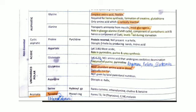Glycine is the simplest amino acid. It gives flexibility to the structure of proteins. It is optically inactive and is associated with the heme system, cytosine synthesis, creatinine formation, and glutathione.